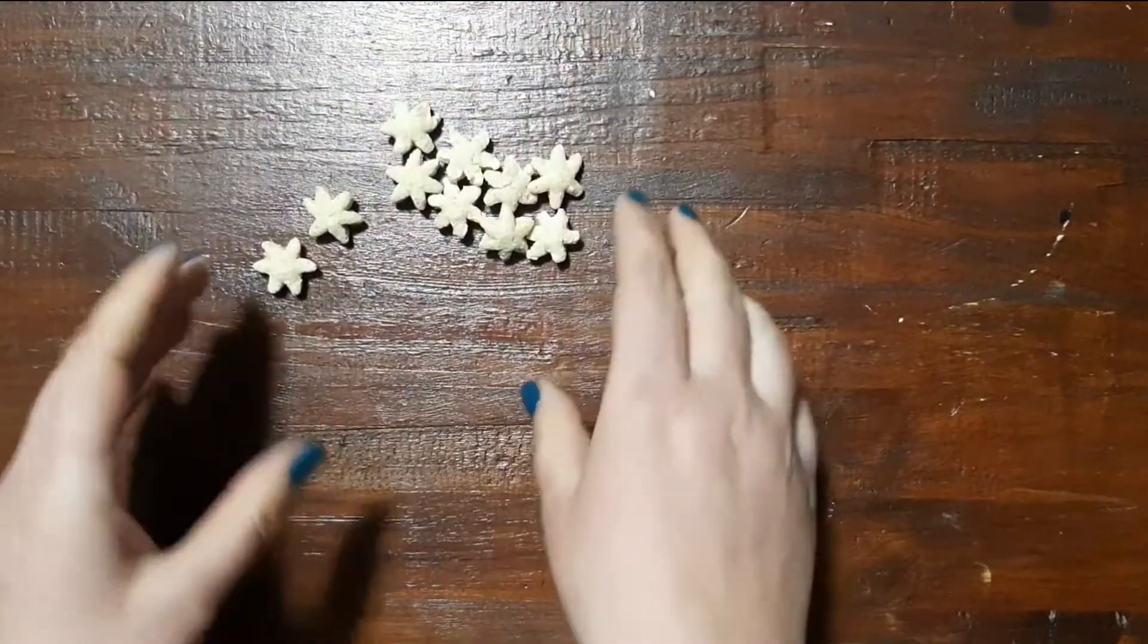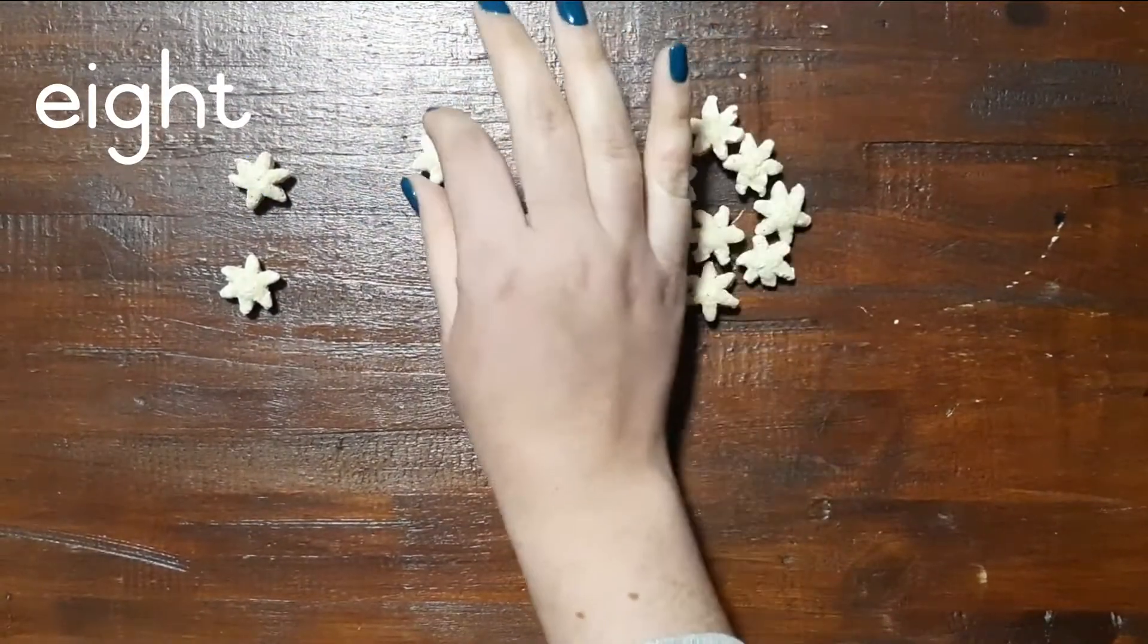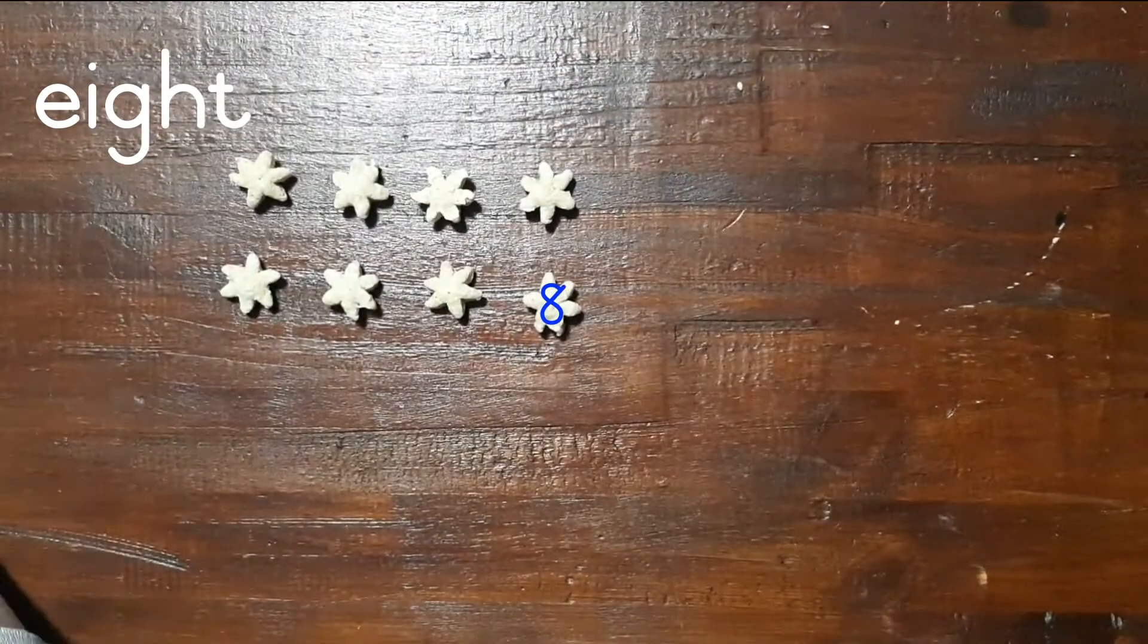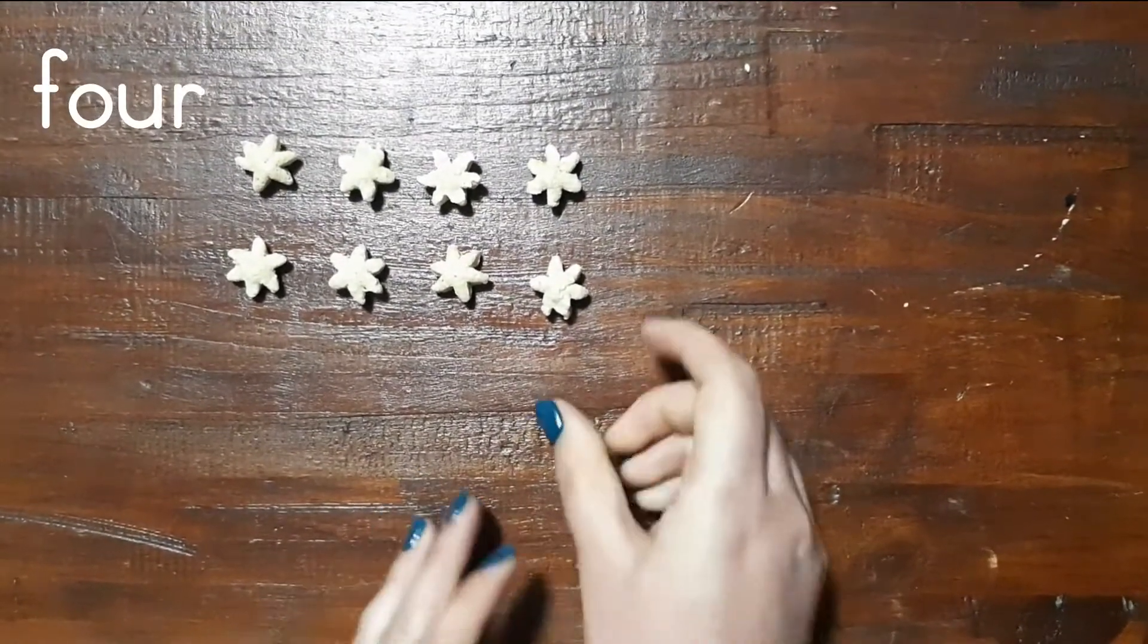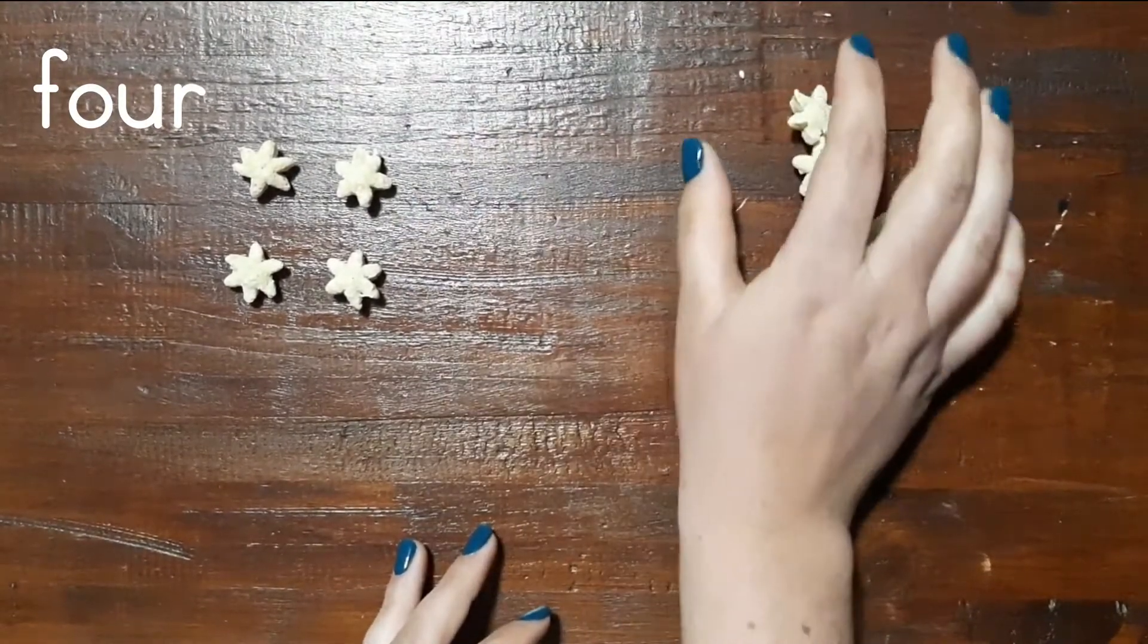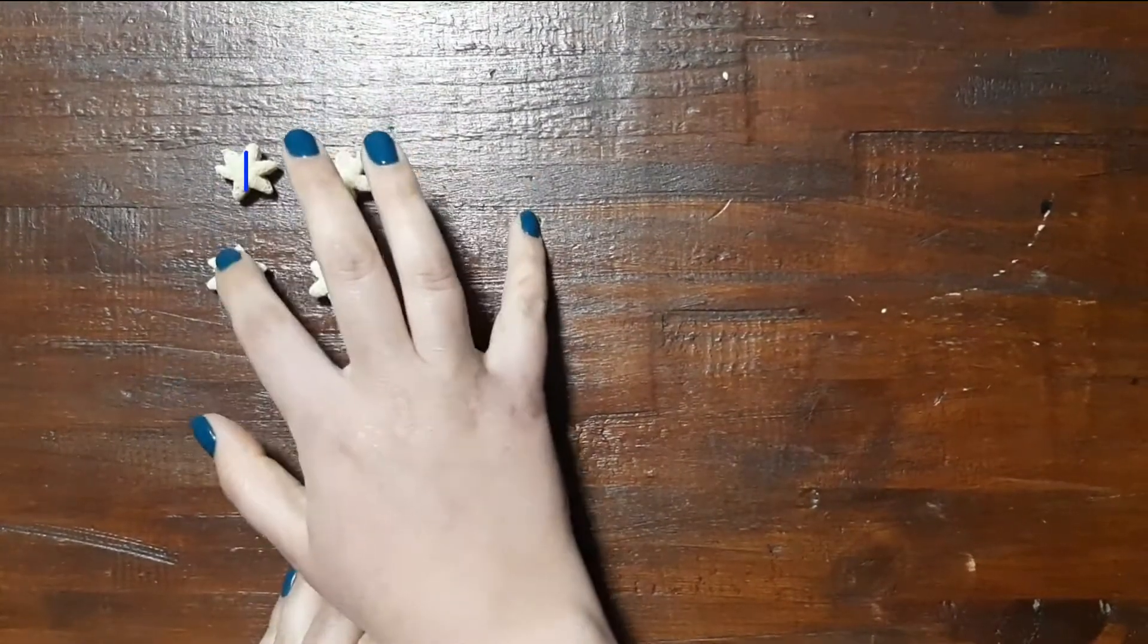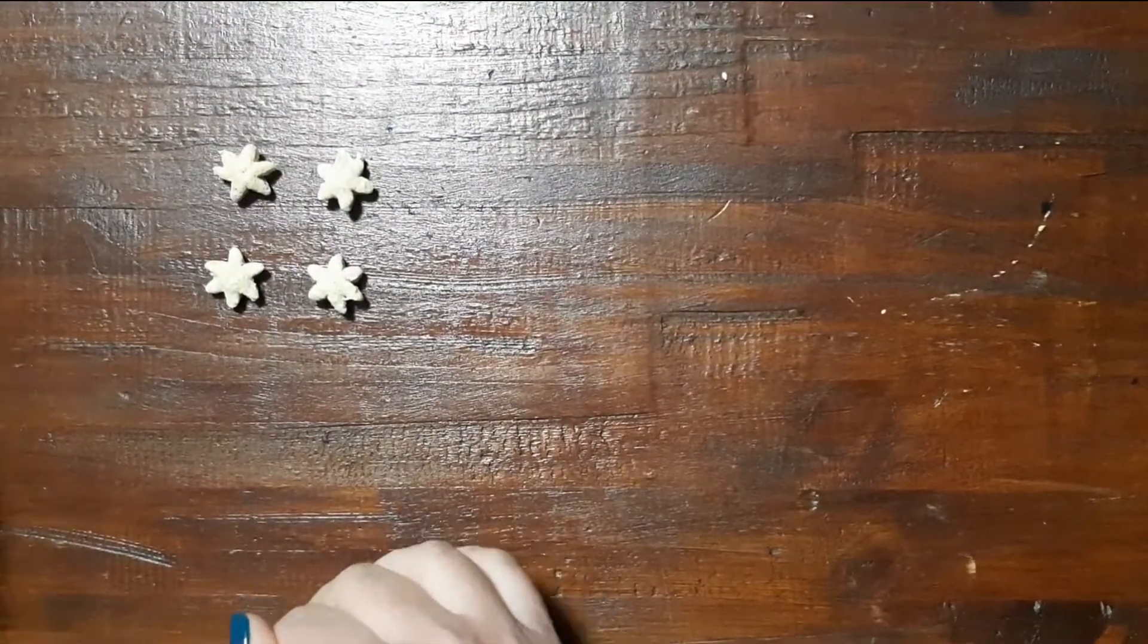Okay. So now let's pretend I've got 8 stars. [Counts 1 through 8] And then I lose 4 of my stars: 1, 2, 3, and 4. We take them away completely because they are lost. How many stars do I have left? 1, 2, 3, 4. Four stars. Let's do one more sum.